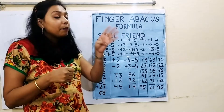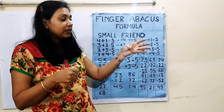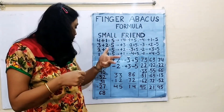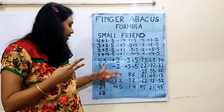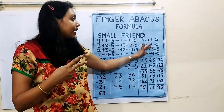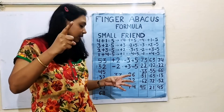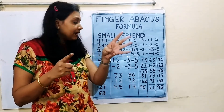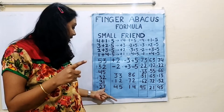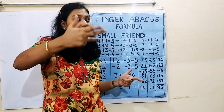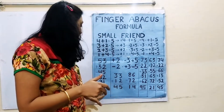Next, plus 32: add plus 30 using formula minus 20 plus 50, then plus 2. Then minus 31: minus 30 using formula plus 20 minus 50, then minus 1. Then plus 27: add plus 20 using formula minus 30 plus 50, then plus 7. The answer is 68.